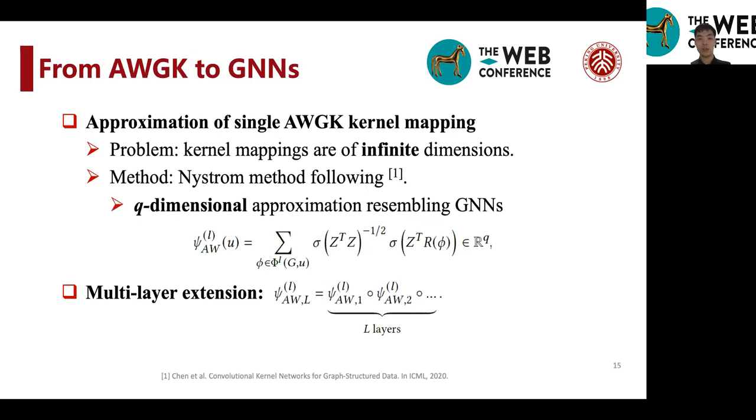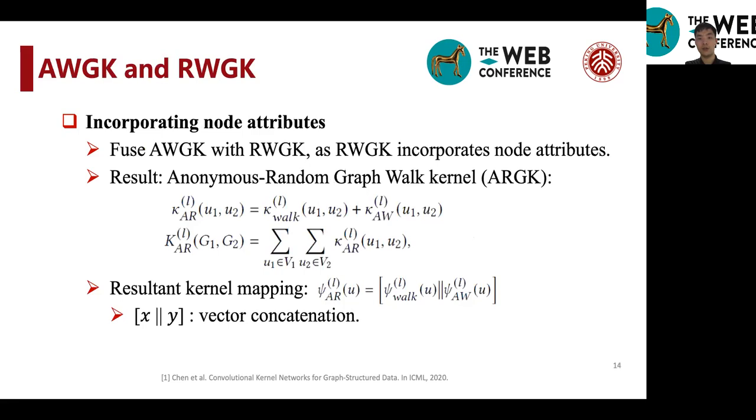And the question of the kernel mappings of the ARWK and the RWGK is that the kernel mappings of both kernels are of infinite dimensions, thanks to the Gaussian kernel introduced here.